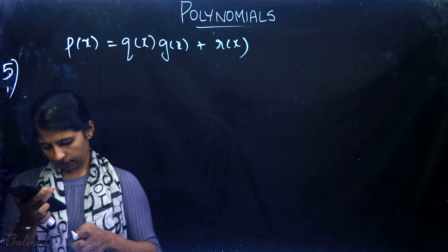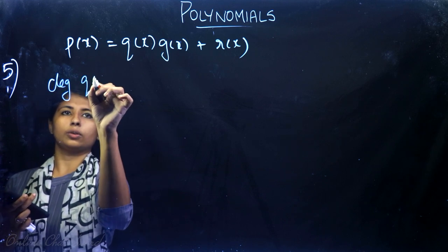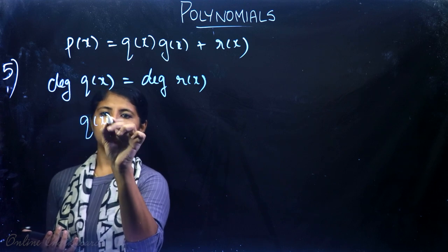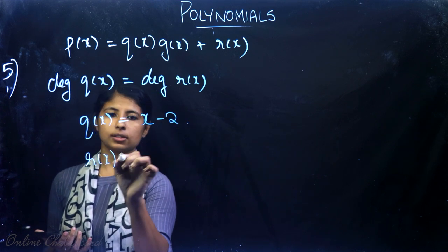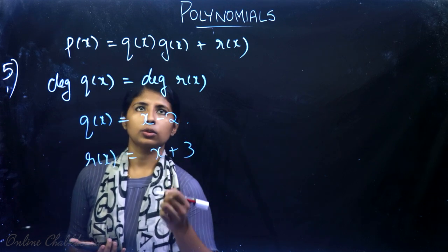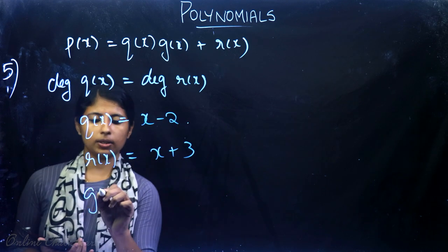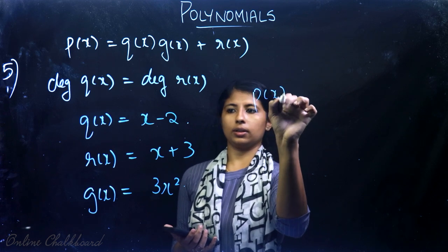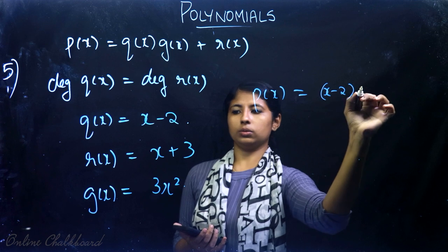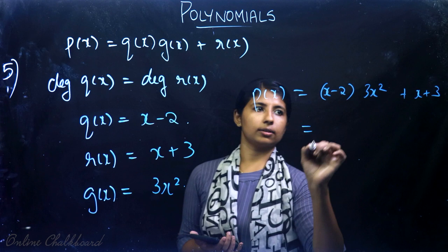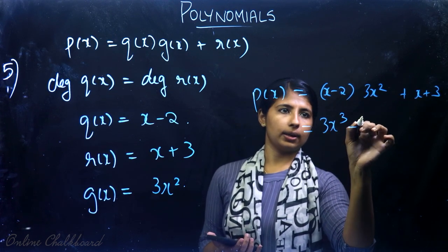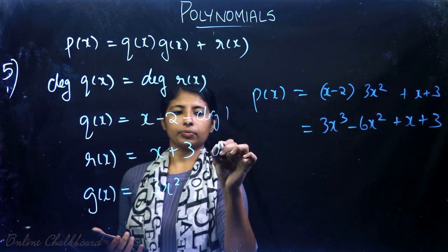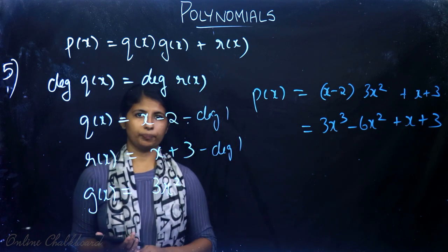The second part asks for degree of Q(x) equal to degree of R(x). Take Q(x) = x − 2 (degree 1) and R(x) = x + 3 (degree 1). Let G(x) = 3x². Then P(x) = (x − 2)(3x²) + (x + 3) = 3x³ − 6x² + x + 3. Here degree of Q(x) equals degree of R(x), both being 1.